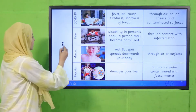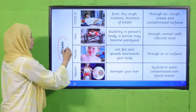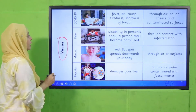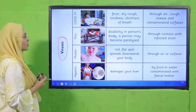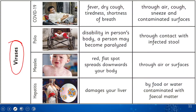Now let's discuss another pathogen: viruses. Let's see which diseases the virus causes. The first is COVID-19, caused by the coronavirus. You have heard this name a lot. Its symptoms include fever, dry cough, tiredness, and shortness of breath.